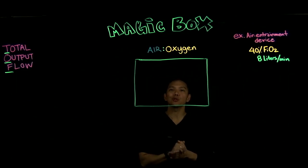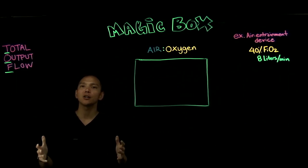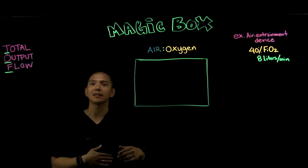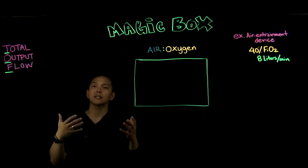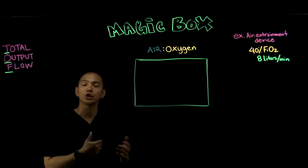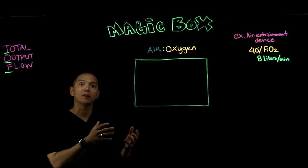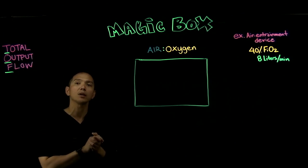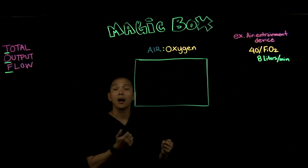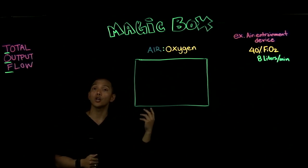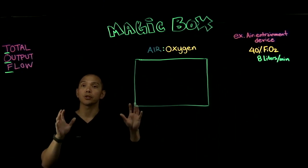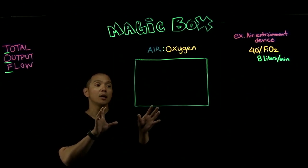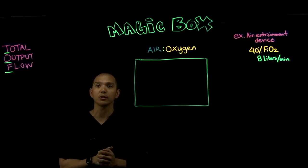Welcome to the Respiratory World. My name is Mr. Acero and today we're going to be talking about the magic box. The magic box tells us about the air-to-oxygen ratio — how many parts air to oxygen does our air entrainment device put out. Air entrainment devices include venturi masks and large volume nebulizers, where we can set a precise FiO2. Today we're going to use this magic box to find the air-to-oxygen ratio.